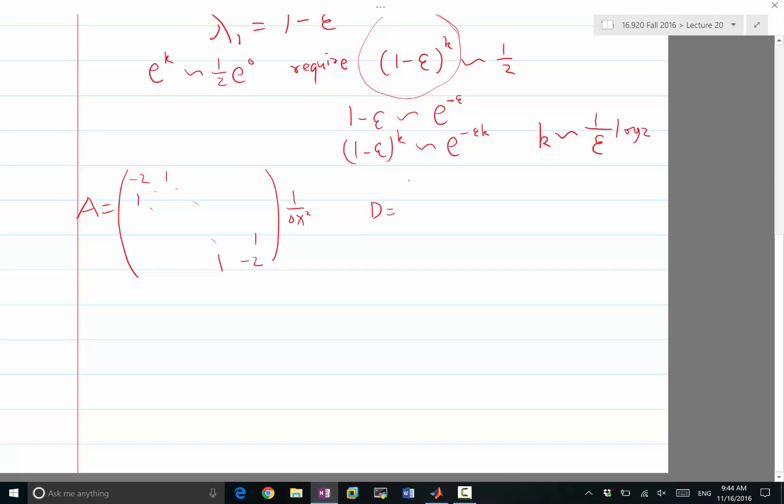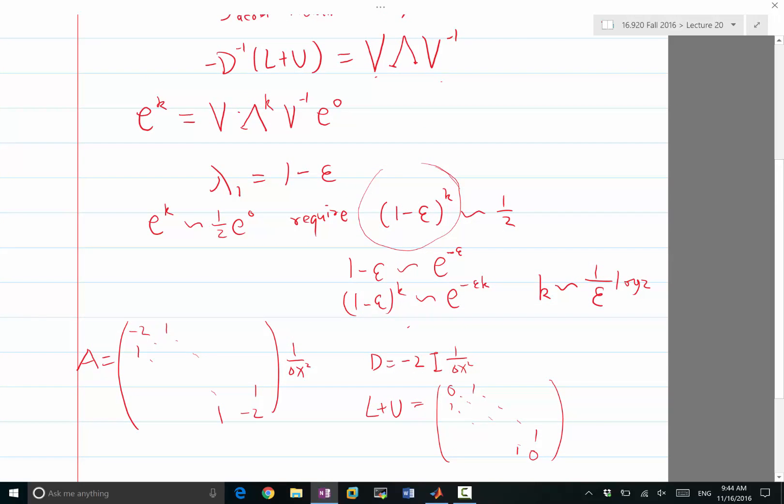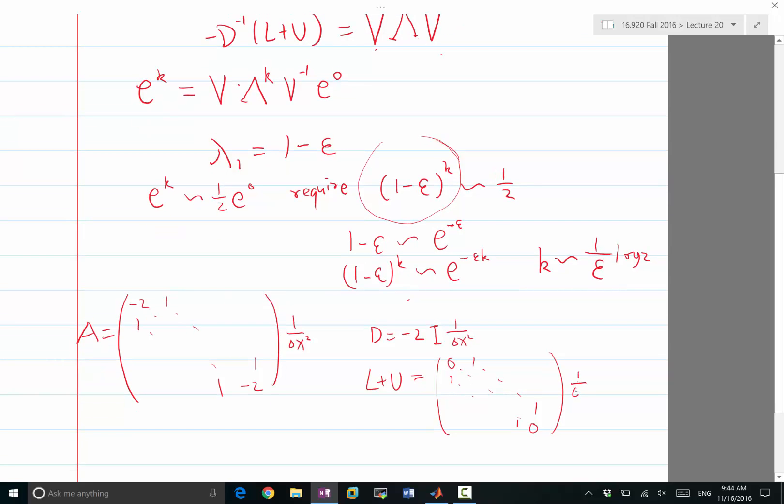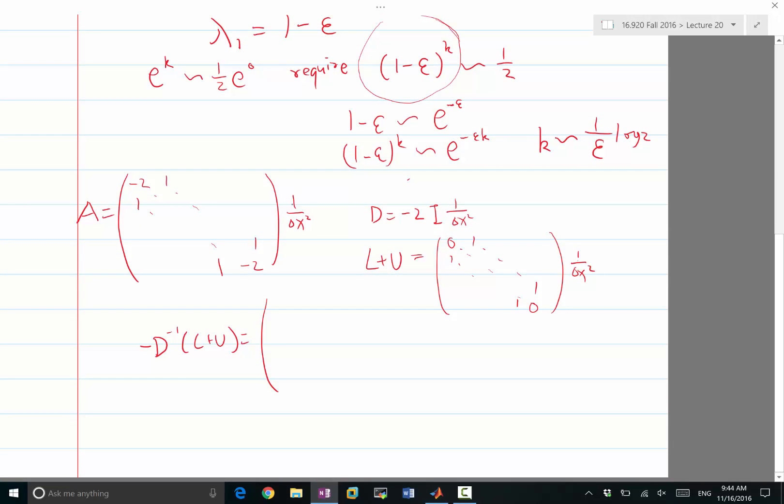My D is, of course, going to be -2 times identity times 1/(Δx)^2. And my L+U would be a matrix that is 0 on the diagonal and the same 1 on the lower and upper diagonals. So the Jacobi iteration matrix, which is -D^{-1}(L+U), would be equal to... the Δx cancel and the minus cancels with this minus in front of 2. So D^{-1}(L+U) would be 0 on the diagonal and half on the upper and lower diagonals.